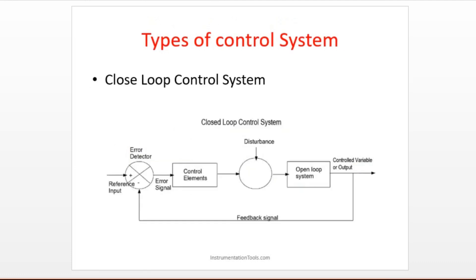Whenever you get feedback from the people in the auditorium — telling you how many people are there and that you need to reduce the temperature by maybe 2 or 3 degrees Celsius — if you are getting that feedback, then the output becomes the desired one. This is the difference between open loop and closed loop.